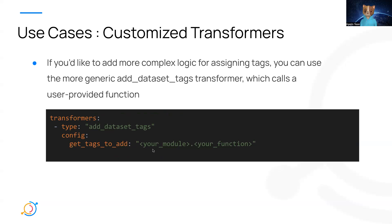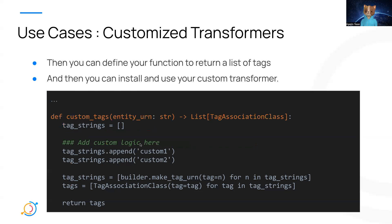Last but not least, you can always customize the transformer — either by calling your own customized function within a provided transformer, or by building a transformer from scratch. If you need more complex logic for assigning tags than simple add or pattern add, you can use the more generic add dataset tags transformer and call your custom function under the config. Then you define your function to return a list of tags with your customized logic, and install and use your customized transformer.